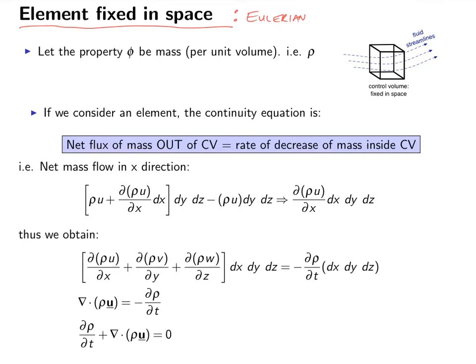And in this example, we're going to consider this control volume here, where we have three incremental directions, dx, dy, and dz, and we're going to equate the net mass flux out of the control volume to the rate of decrease of mass inside the control volume.